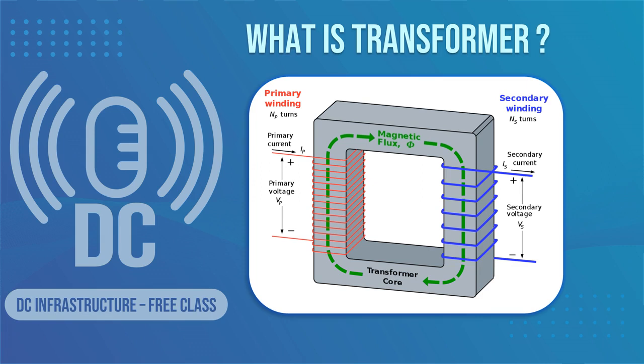The strength of the induced current depends upon the number of times the second wire is wrapped around the iron core. By adjusting the number of turns on the secondary coil, the transformer's output current and voltage can be determined.